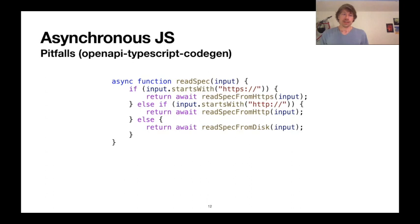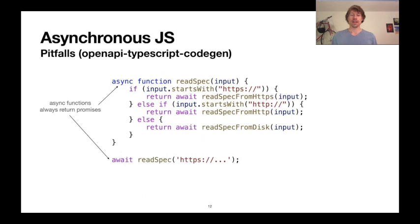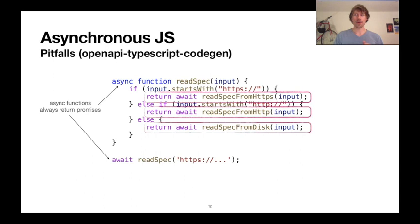The first example of an anti-pattern is from the OpenAPI TypeScript Codegen repository. This is an async function called readSpec that takes some input and, depending on what that input starts with, issues a call to another function. Being an async function, it always returns a promise. But that's weird — because what are we doing in the return of this function? We're awaiting a call to something, unwrapping the promise returned by readSpec from HTTPS, and then wrapping it again in a promise and returning it. Really, we're basically awaiting await of readSpec from HTTPS, which is inefficient.